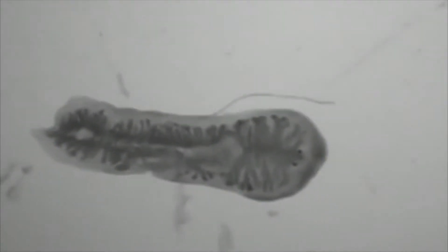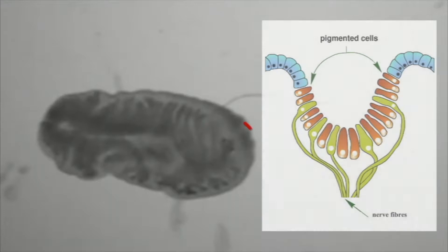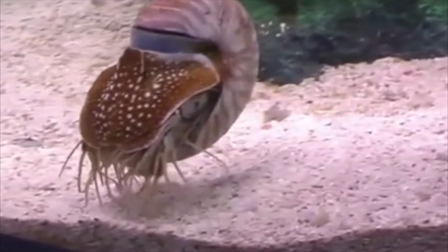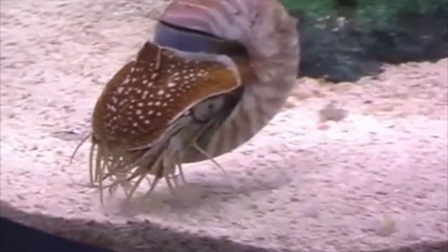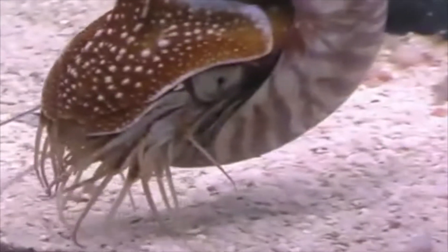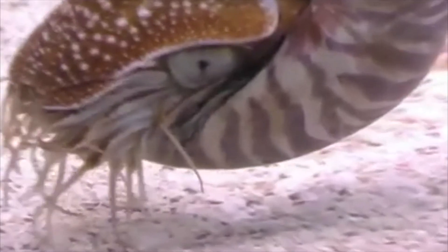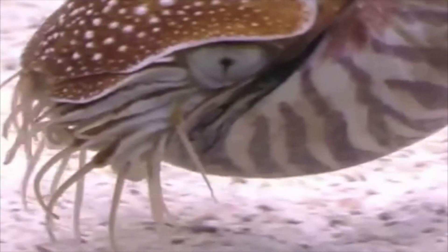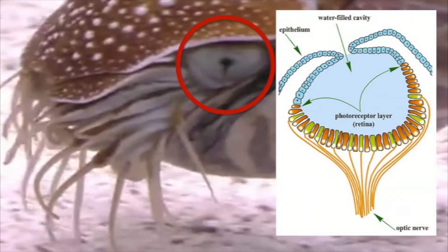The next stage can be seen in flatworms. Flatworms have a small pit containing light-sensitive pigment. The pit allows the flatworm to detect the direction of a shadow of a predator. The nautilus is a marine mollusk. It has an optic cup in which the epithelium folds over to form a small hole, like a pinhole camera. This allows focusing of light onto the retina, increasing visual acuity.